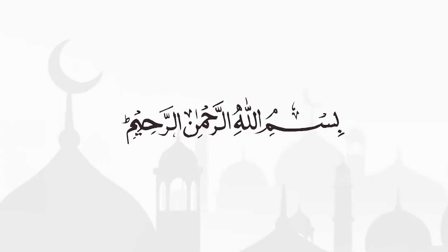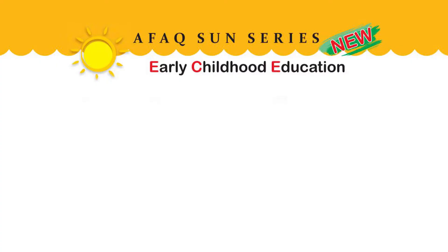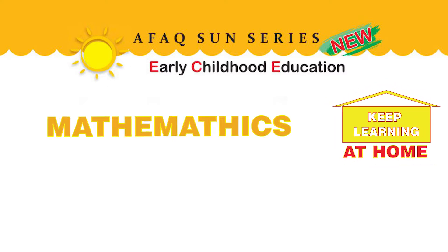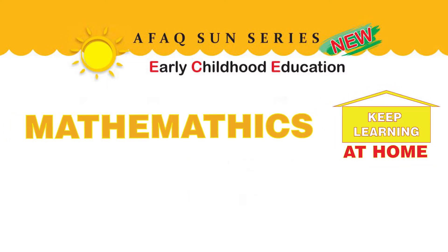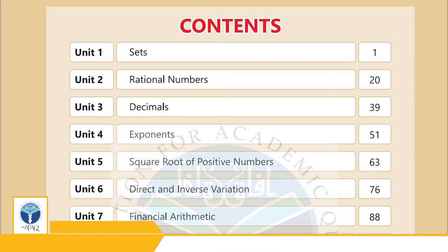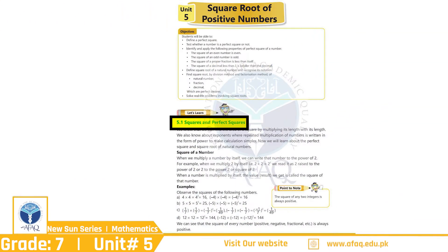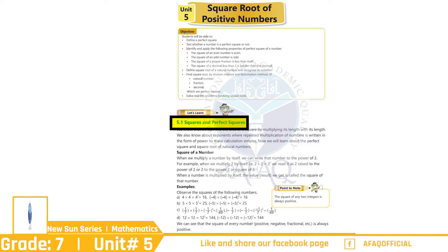My name is Rahmanir Rahim. Afaq Newsome Series, Student Resource Pack, Keep Learning at Home, Mathematics Grade 7, Academic Planner Unit 5, Square Root of Positive Numbers, Page 63, Topic 5.1: Squares and Perfect Squares.